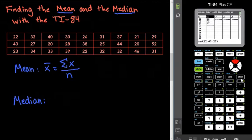If you want to clear a list, if you have information in there, you want to highlight up to the top where it's highlighted on L2 or whatever list you're trying to clear. And hit the CLEAR button and ENTER and it will get rid of all of that information.